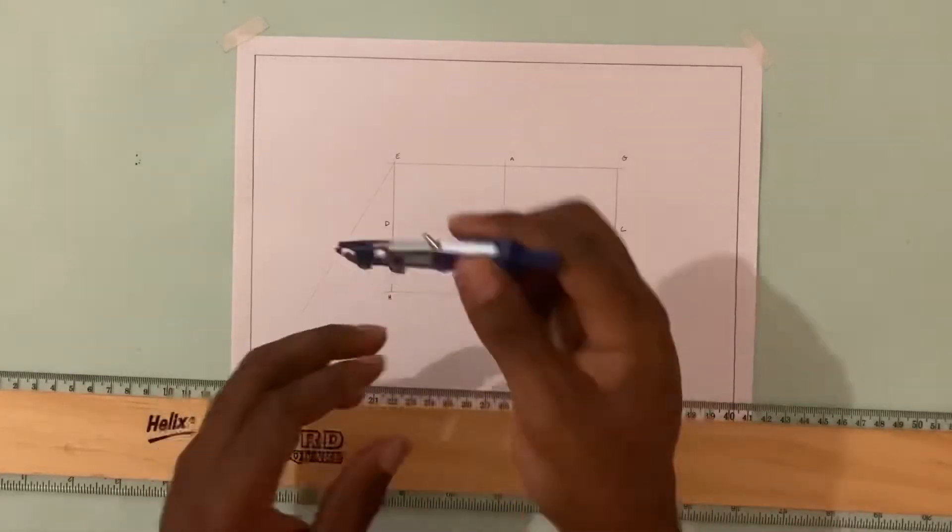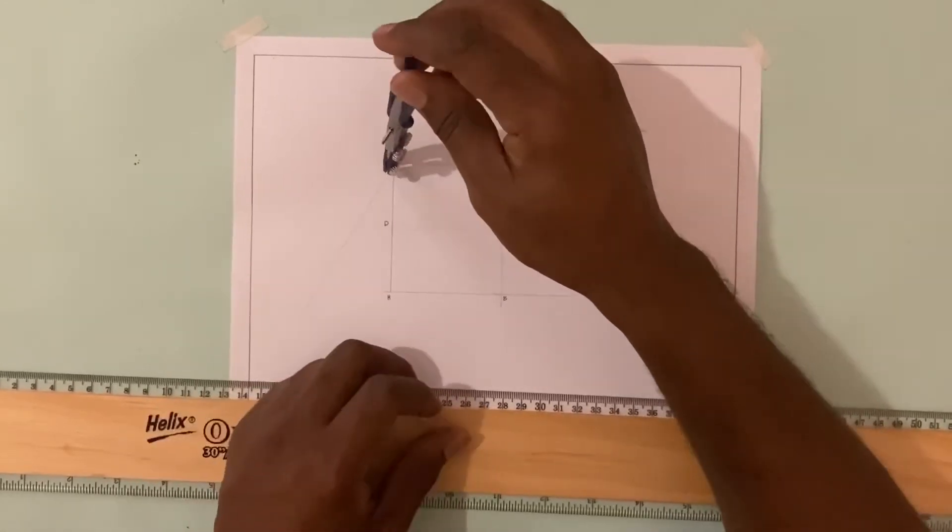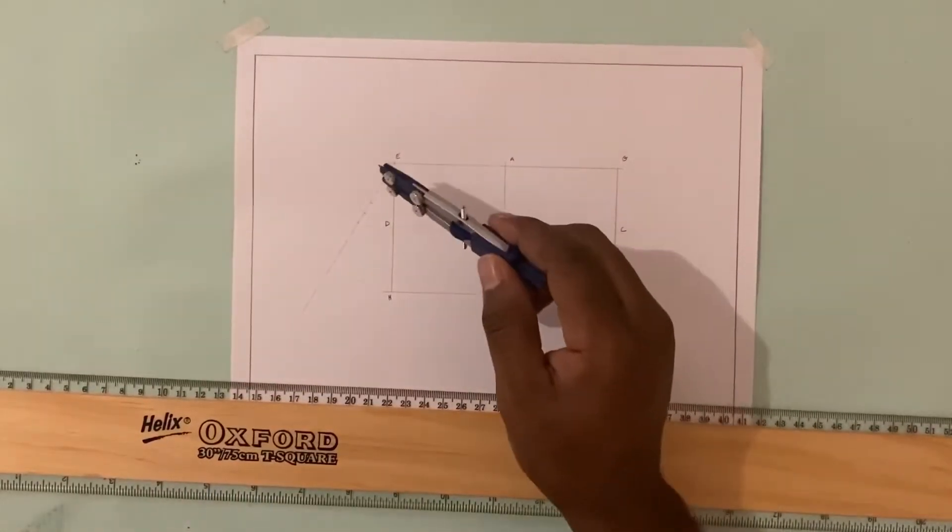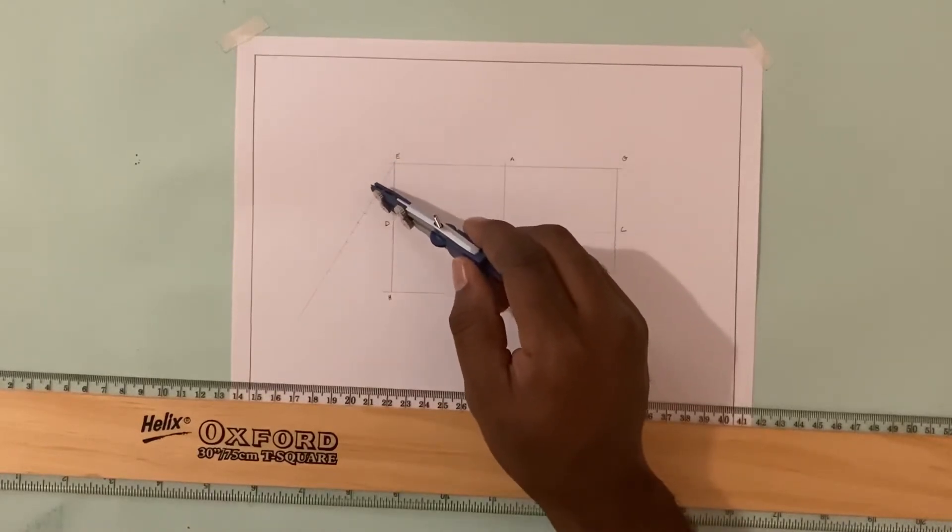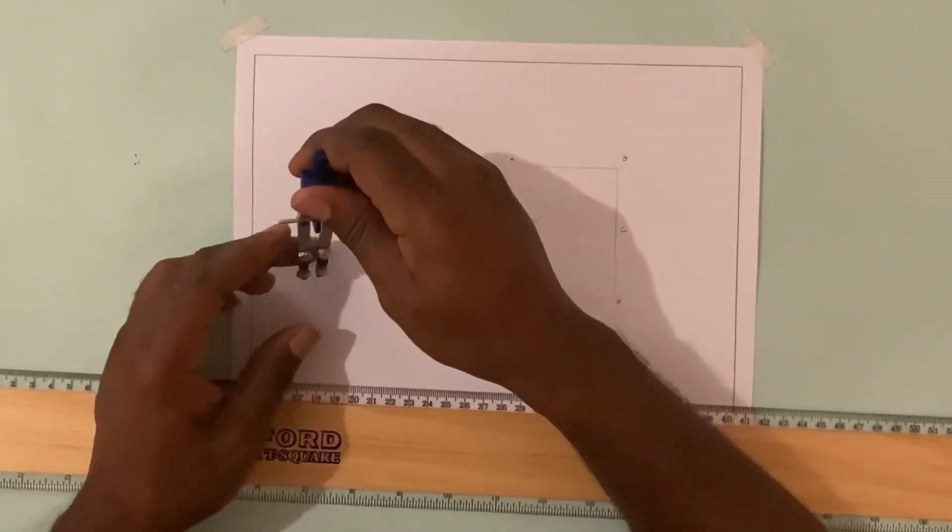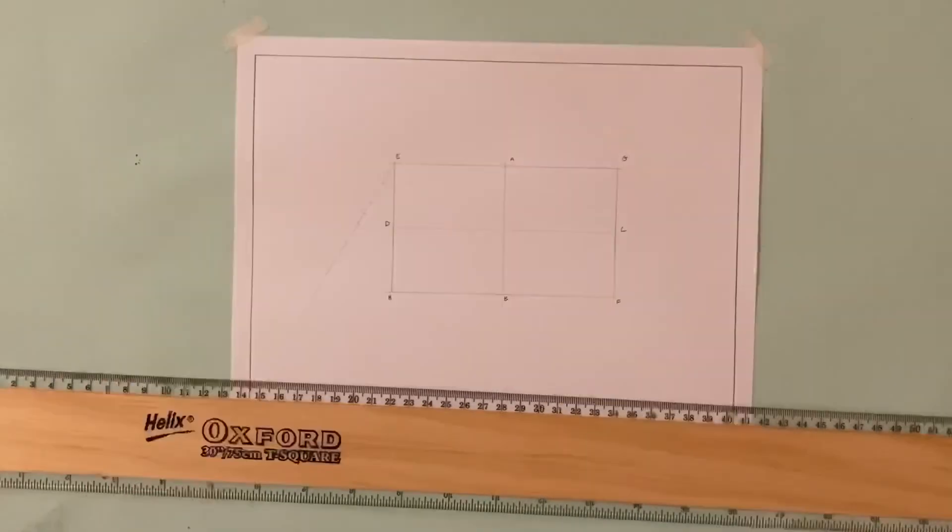Next I'm going to take my compass and open it to a desirable radius and mark off all my points. It's 1, 2, 3, 4, 5, 6, 7, 8, 9, 10, 11, and one more, 12.